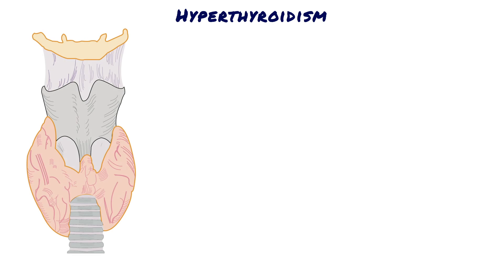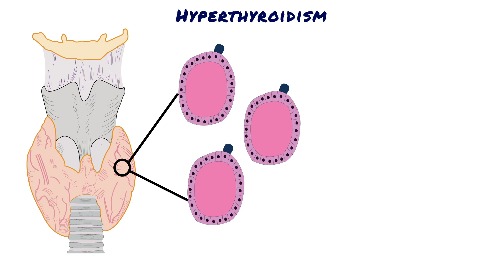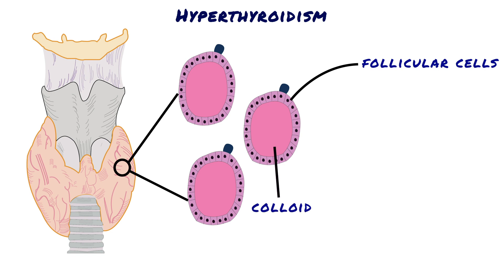The thyroid is a butterfly-shaped gland that straddles the trachea in the front of the neck. The two lobes of the human thyroid are connected by a bridge of tissue called the thyroid isthmus. The portion of the thyroid concerned with the production of thyroid hormone consists of follicles. Each spherical follicle is surrounded by follicular cells and filled with pink-staining proteinaceous material called colloid, which consists predominantly of the glycoprotein thyroglobulin.